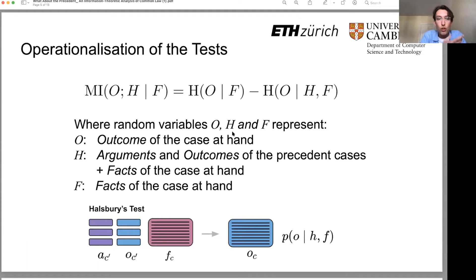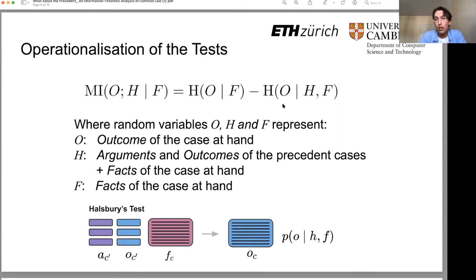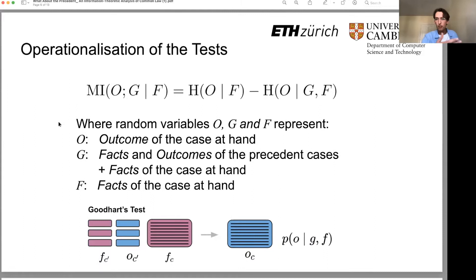How do we approach this question using computational theory and NLP? We decided to operationalize the tests using mutual information. We take the cross-entropy of the outcome given the facts of the case we're trying to adjudicate on, and then subtract from that the cross-entropy of the outcome given Halsbury's view of precedent — which is the arguments of the precedent cases together with their outcomes — and the information about the facts of the case. That difference gives us the mutual information of the outcome given the Halsbury view and the facts.